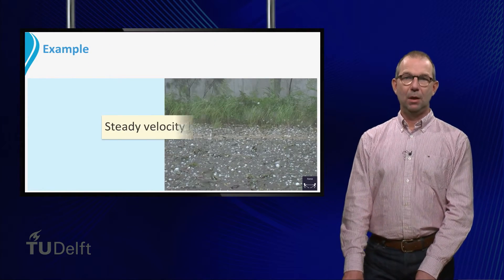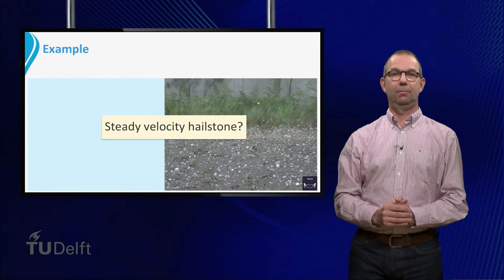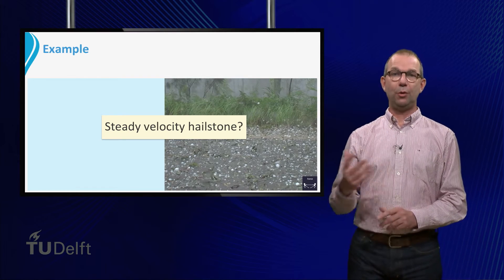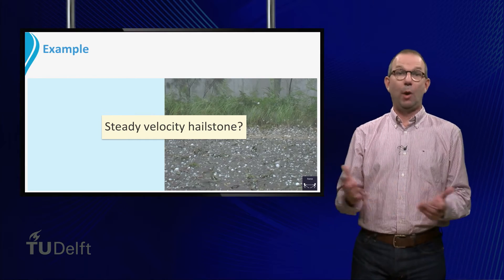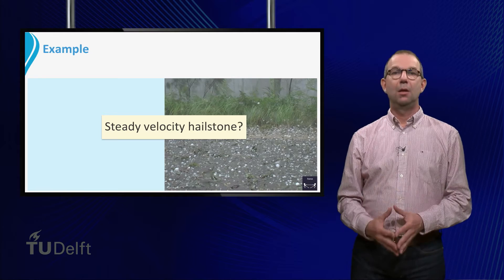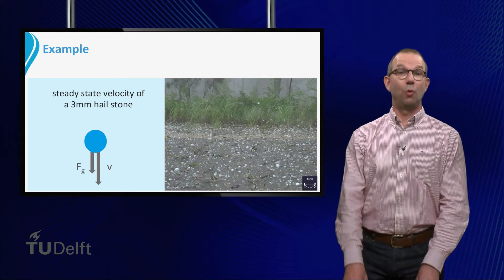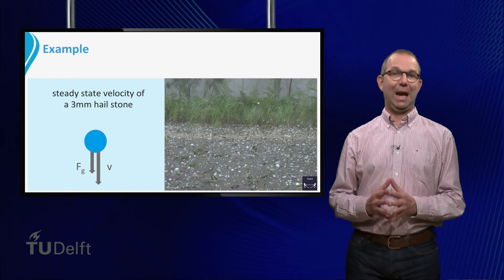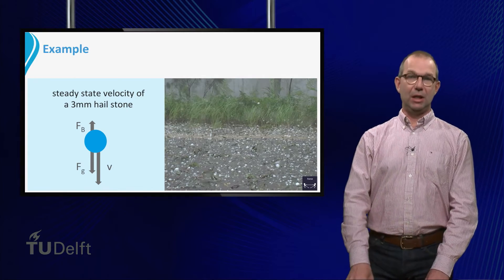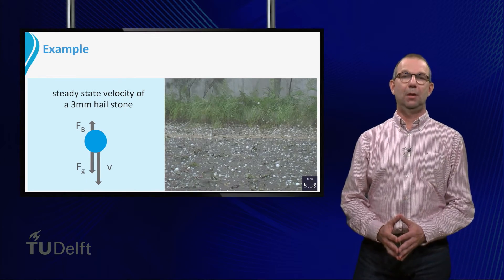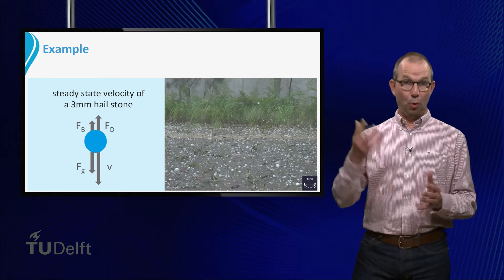Let us do an example. What is the steady velocity of a hailstone of 3 mm diameter coming down on our heads? In order to find this, we need to think about which forces act on the hailstone. Of course, gravity — otherwise the hailstone wouldn't fall down at all. So we draw a hailstone falling down with velocity v, and we draw gravity. Buoyancy from the air also acts: according to Archimedes, this force is upward and equal to the weight of the displaced air. Finally, we draw the drag force as the hailstone is moving through the air.